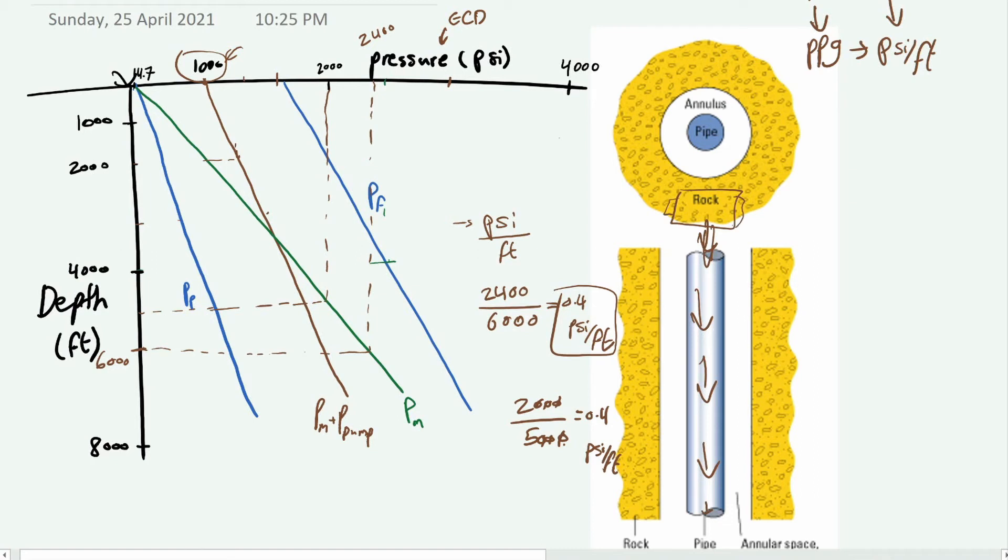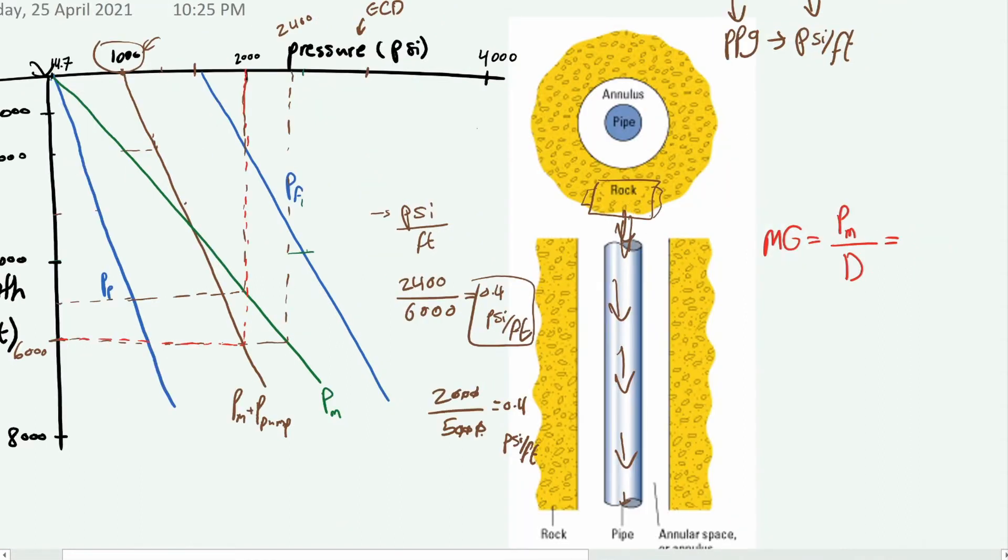So how would you get the mud gradient in this case? At 6000, the mud gradient is the mud pressure over the depth. What this pressure is—the 2000—is actually the mud pressure plus the pump pressure. We only want the mud pressure, we don't want the pump pressure. We know that the pump pressure is equal to 1000 from here. So it's just gonna be the whole 2000 minus the 1000—this is the total pressure, mud plus pump—and then you take away the pump pressure, over D which is 6000.